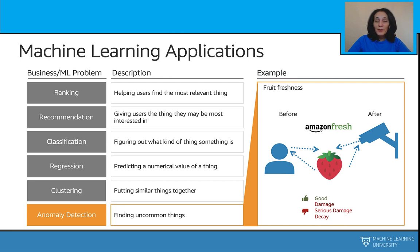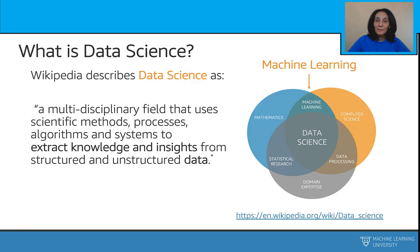You must have heard the buzzwords data science and machine learning. So let's see what data science is and where and how machine learning fits in. Wikipedia describes data science as a multidisciplinary field that uses scientific methods, processes, algorithms, and systems to extract knowledge and insights from structured and unstructured data.